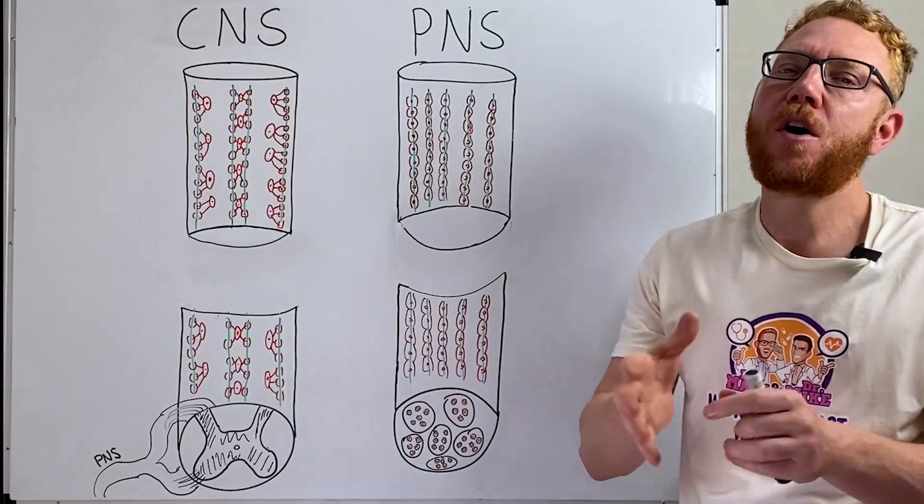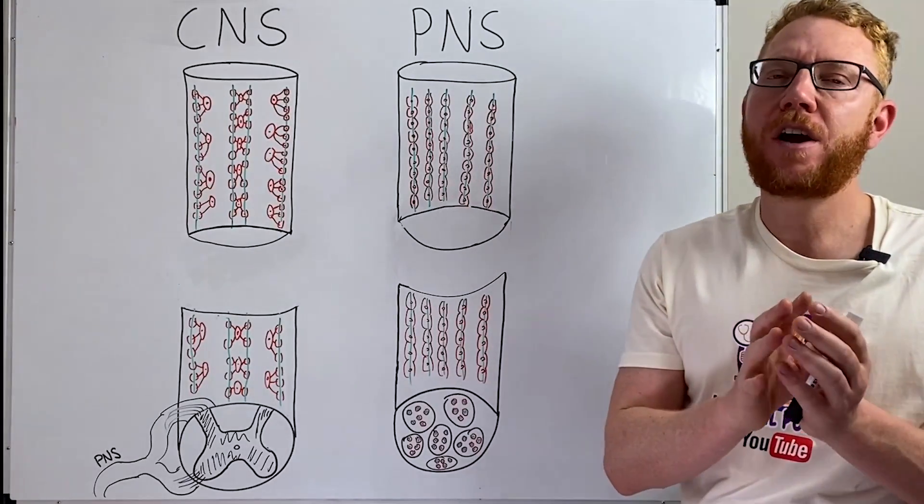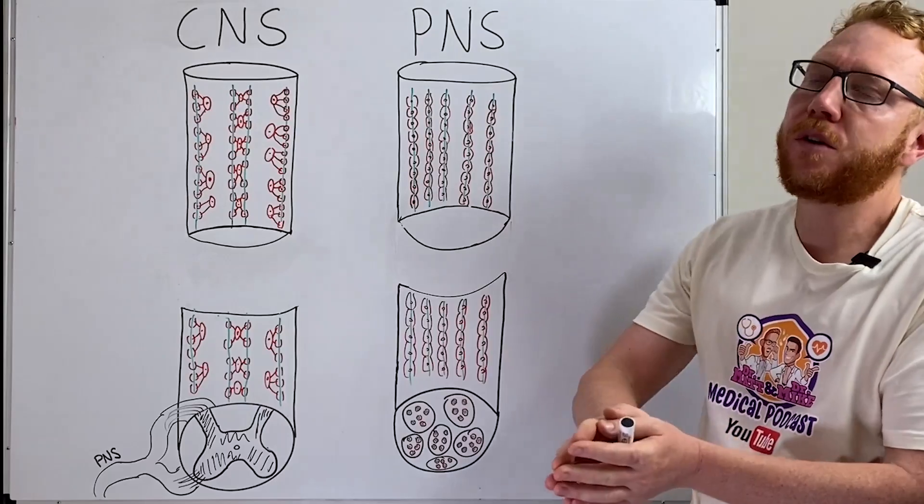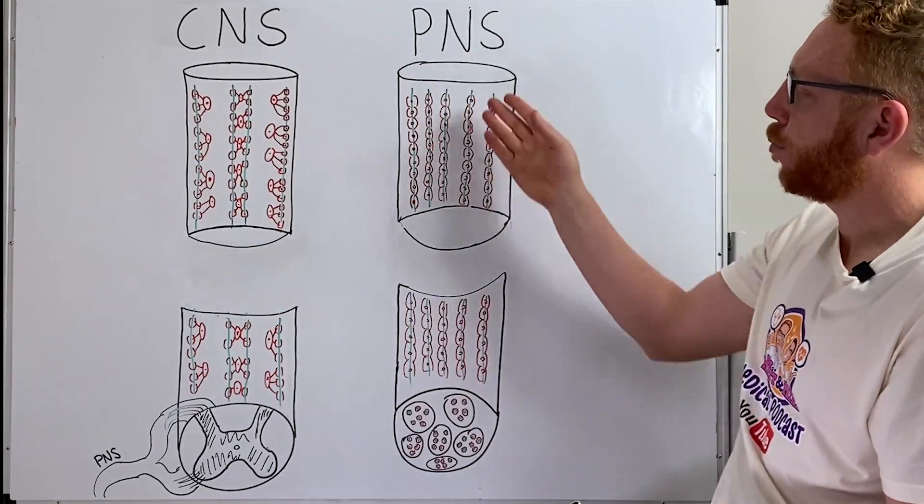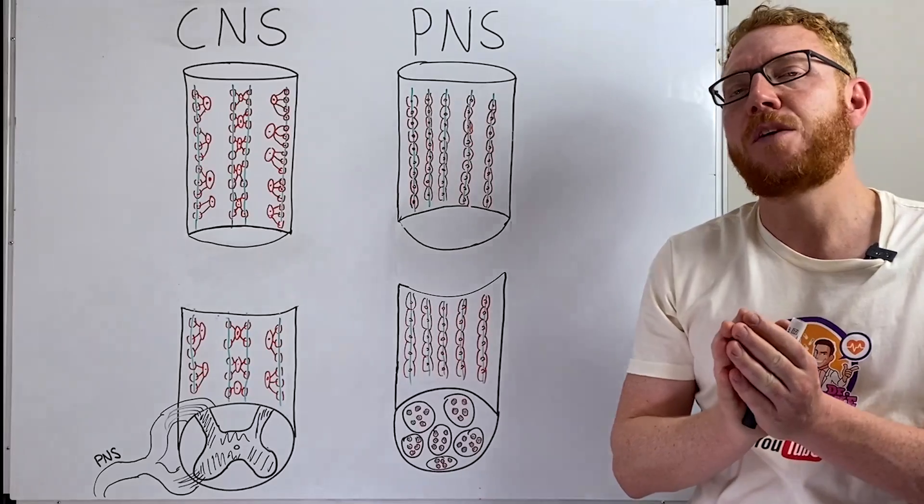Welcome to this video on nerve injury and regeneration. Specifically we're going to look at the central nervous system in injury and regeneration and the peripheral nervous system in injury and regeneration.